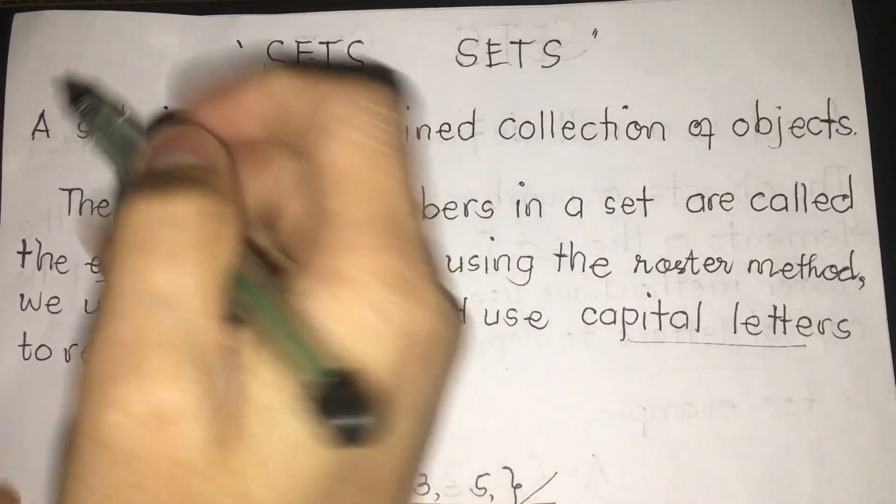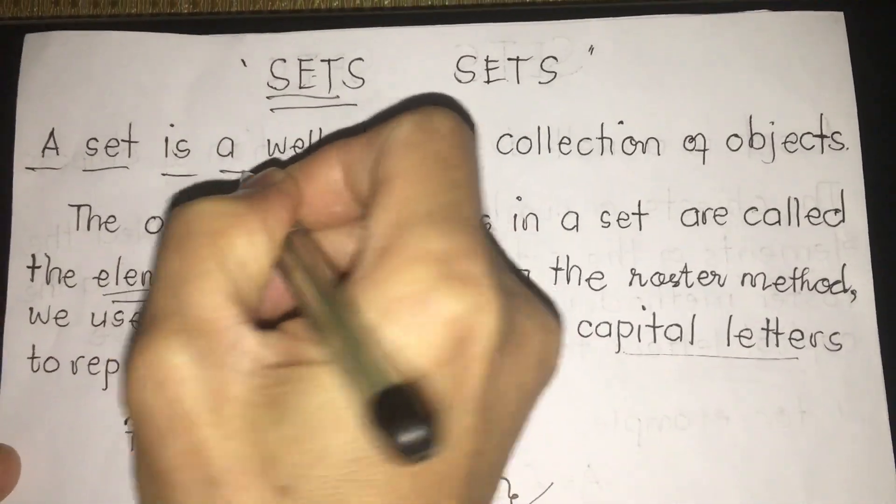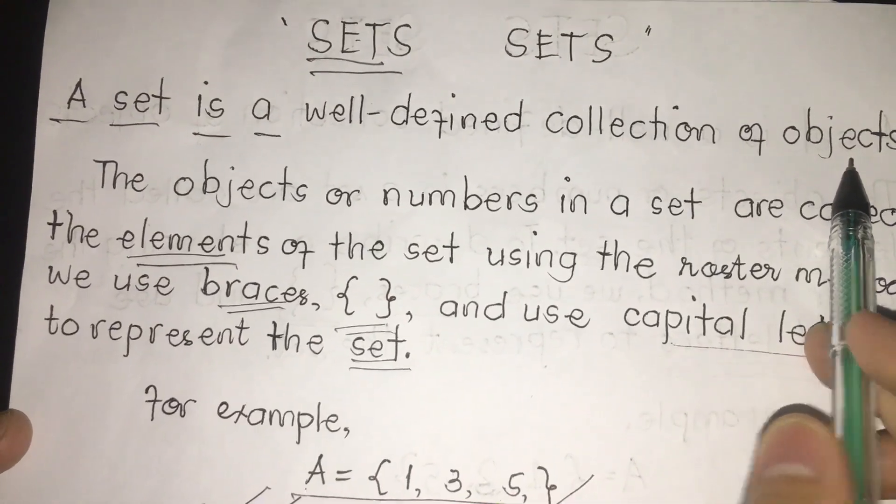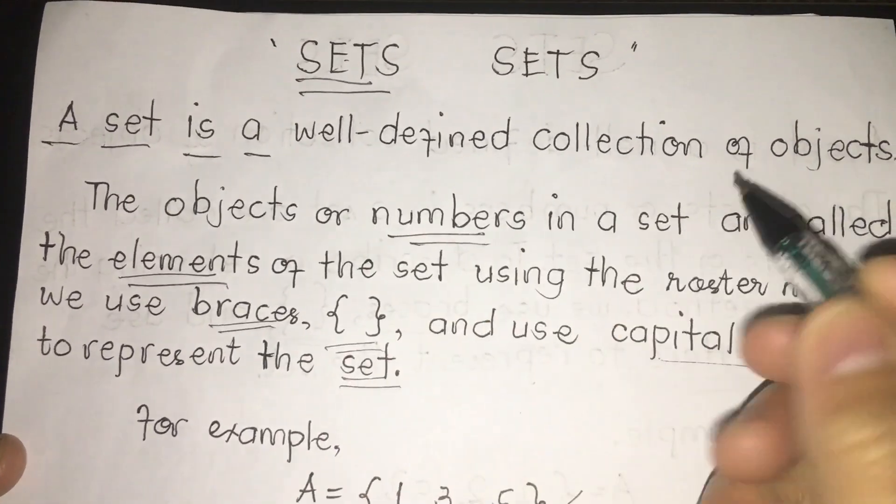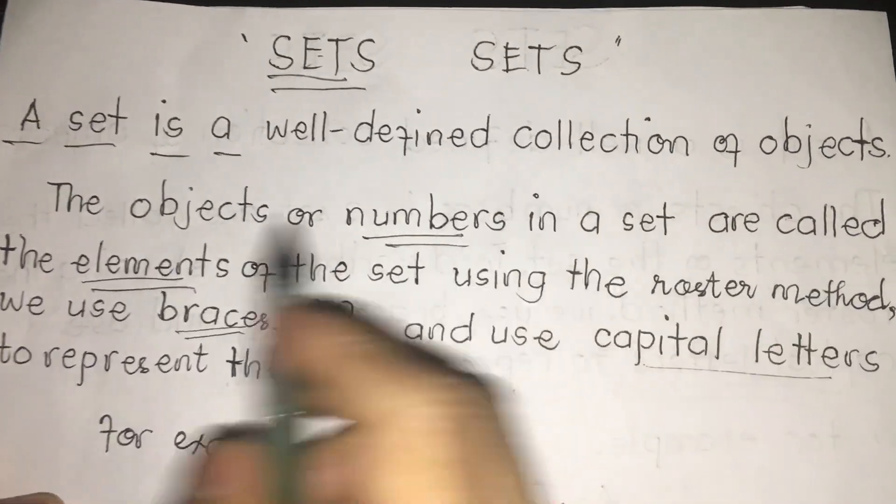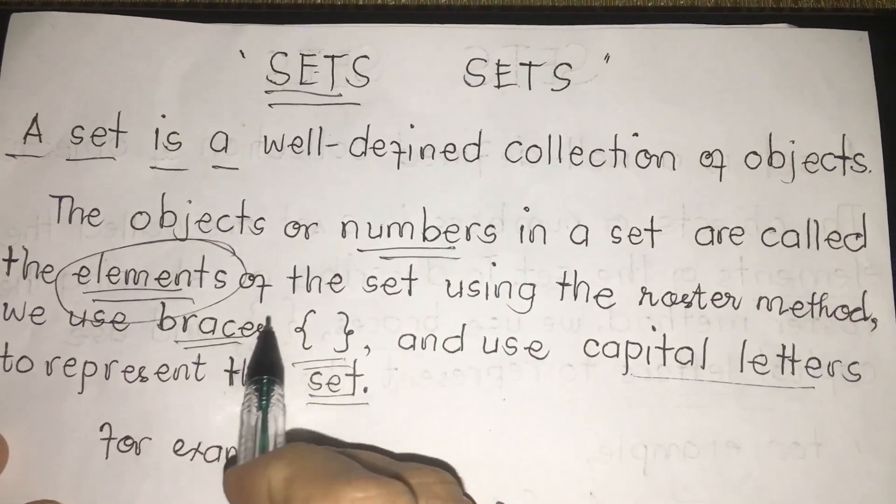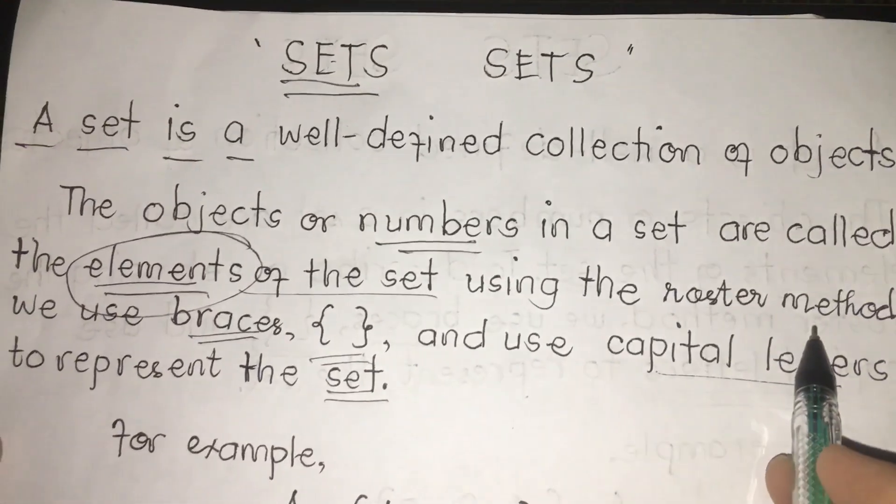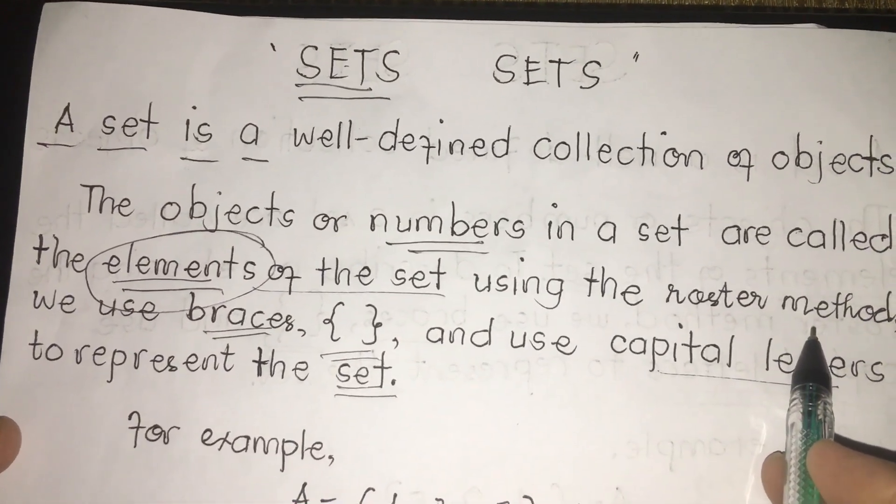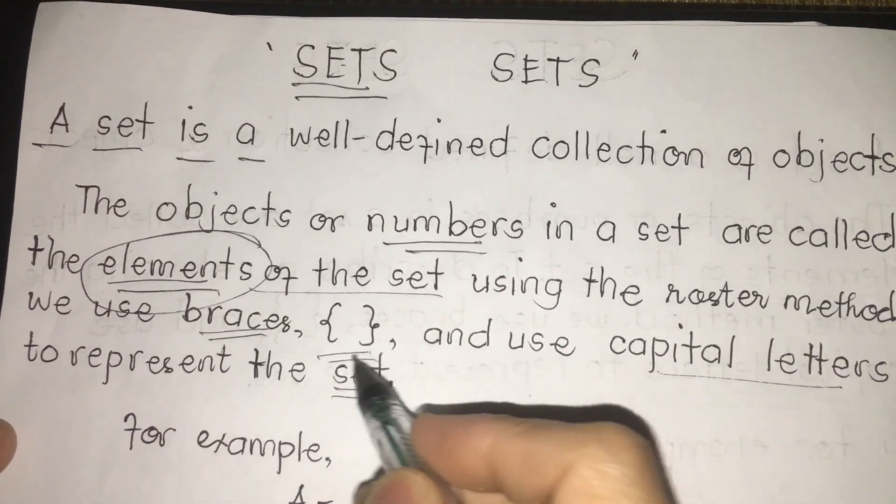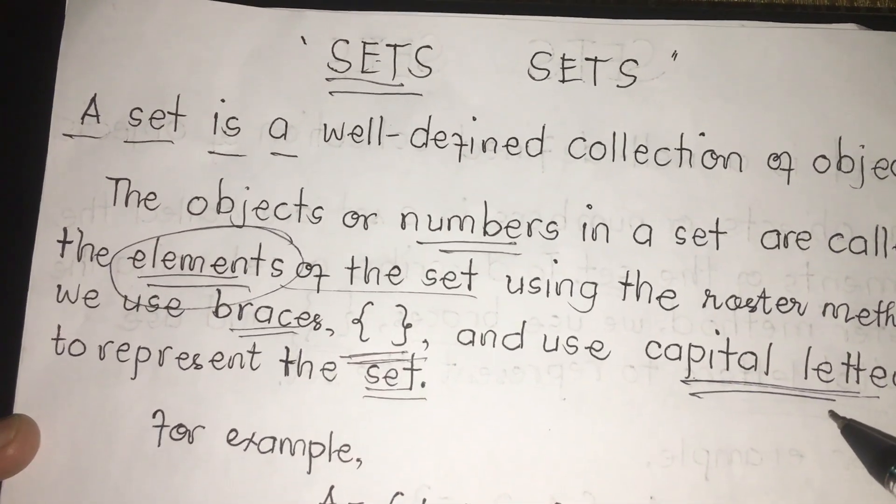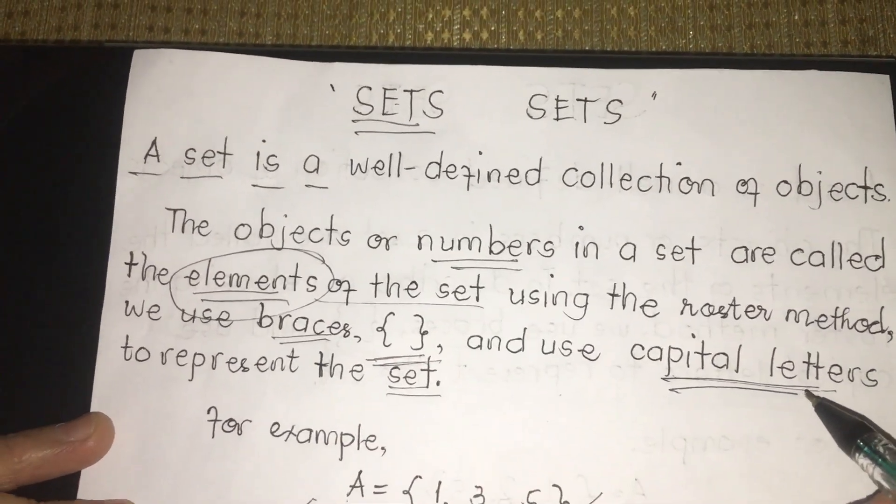A set is a well-defined collection of objects. The objects or numbers in the sets are called elements of the set. Using the roster method, we use braces and use capital letters or uppercase letters just to represent the sets.